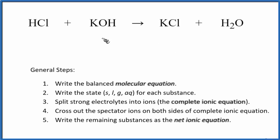In this video, we'll write the net ionic equation for HCl plus KOH. This is hydrochloric acid and potassium hydroxide. When we write net ionic equations, the first step is to balance the molecular equation. In this case, it's already balanced, so we don't need to do anything. We can move right into writing the states for each of these substances.